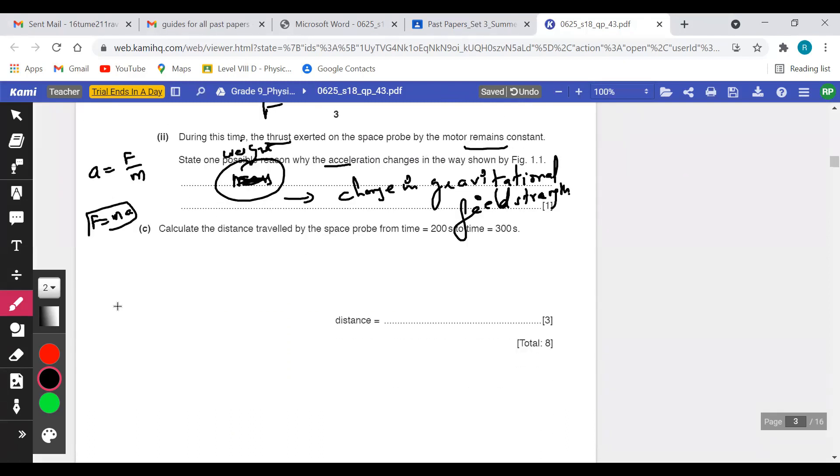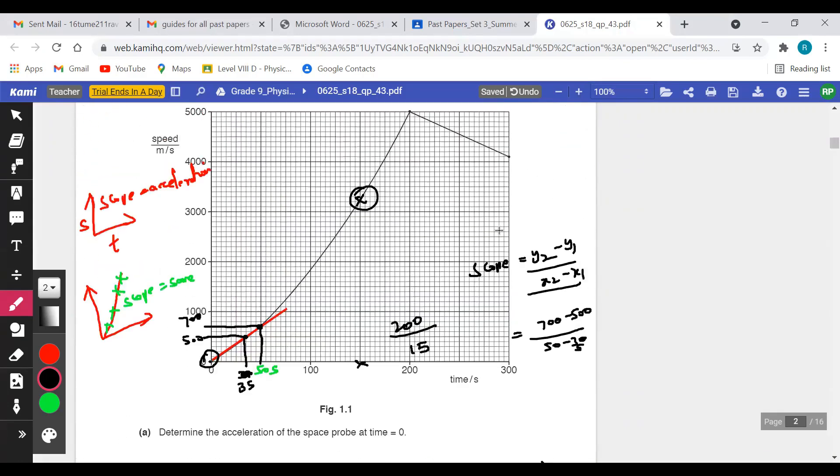Distance traveled from 200 to 300. Kindly pay attention to the pink color. When I cover the area between 200 to 300, I can see that it's a trapezium. Area of trapezium is 1 by 2 height into sum of parallel sides.